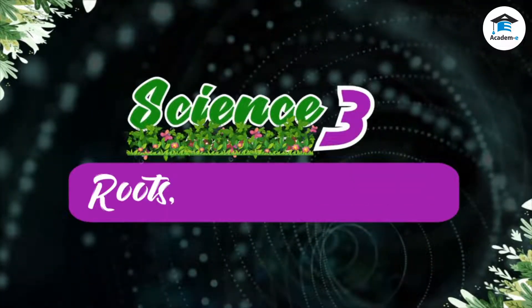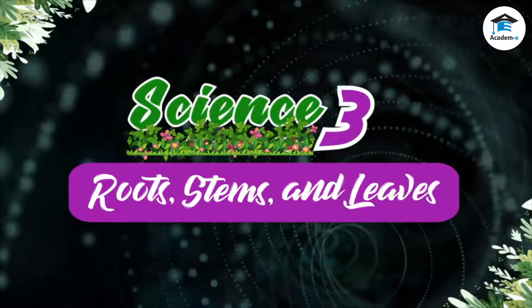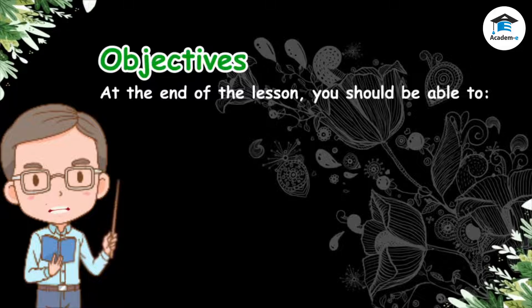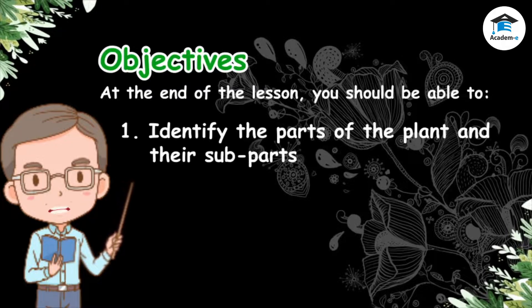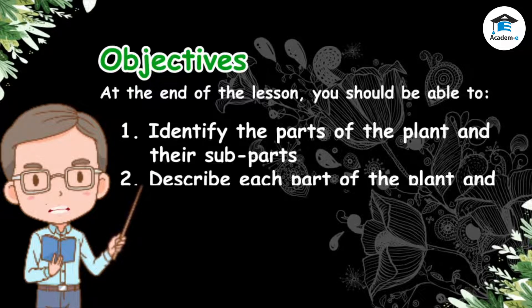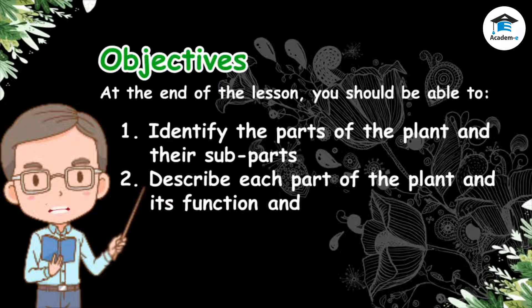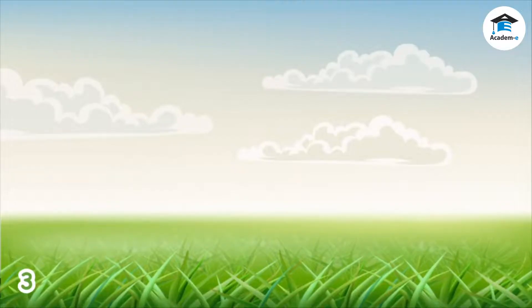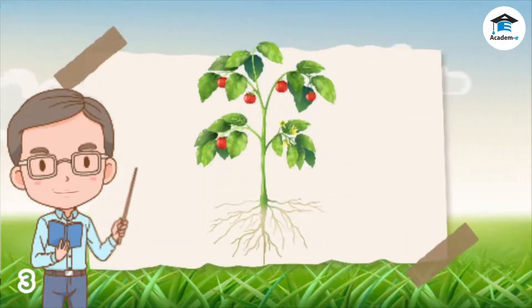Science 3: Roots, Stems, and Leaves. Objectives: at the end of the lesson you should be able to identify the parts of the plant and their subparts, describe each part of the plant and its function, and tell and appreciate the importance of each part of the plant. Look at the picture — what do you see?